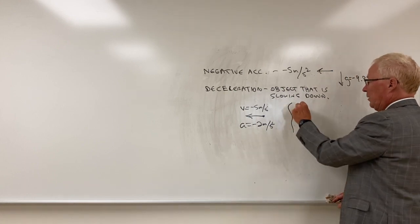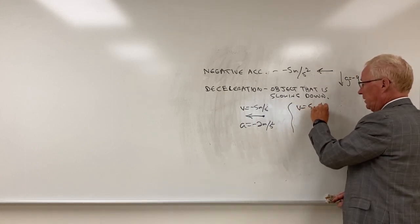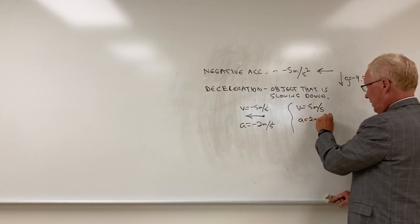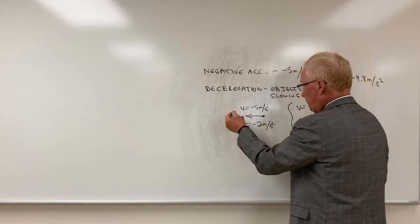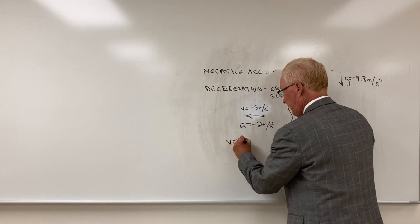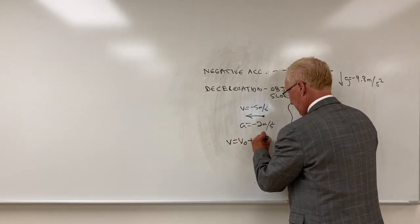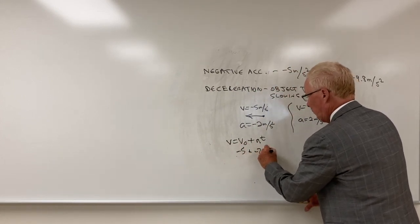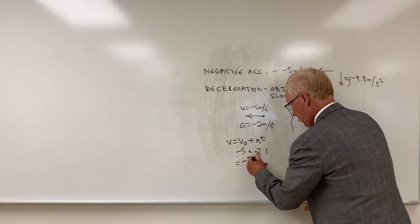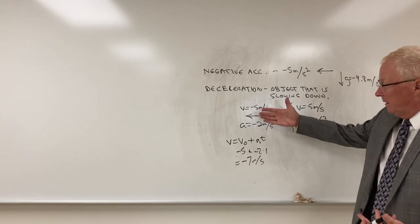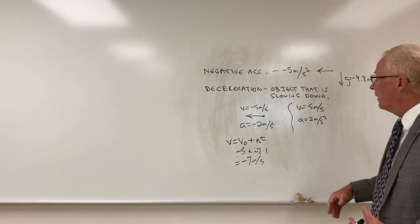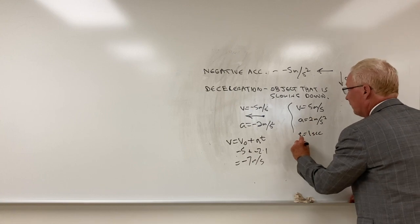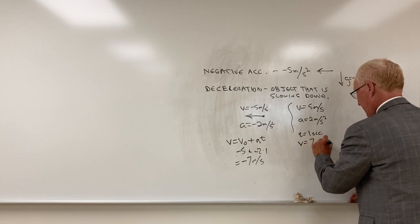This would be exactly comparable to if you have a velocity of 5 meters per second in the positive direction and an acceleration of 2 meters per second squared in the positive direction. In this case, v would be v-naught plus a times t, so that'd be minus 5 plus negative 2 times 1, which would be minus 7 meters per second. So every second it's gaining negative velocity — negative 5, just like it would be positive 5 after one second; at t equals 1 second, velocity would be 7 meters per second.